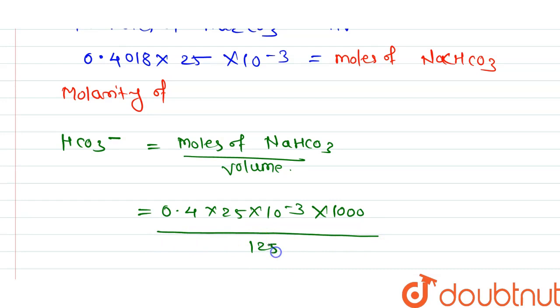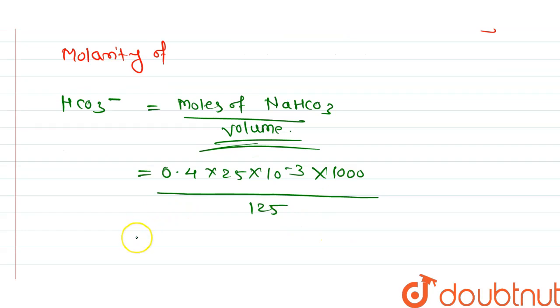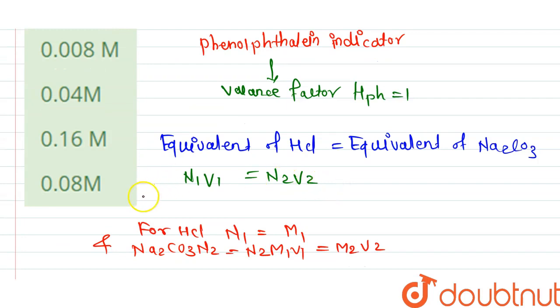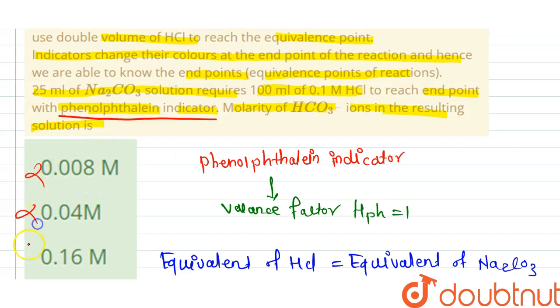So overall calculation, the final answer is 0.08. This is molarity, because it is multiplied by 1000. So correct option is 0.08, the D option is correct and another option is wrong.